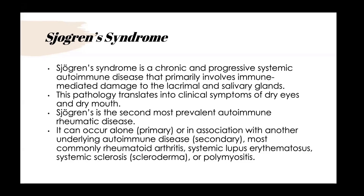Sjogren's is fairly common — it's the second most prevalent autoimmune rheumatic disease. It can be primary, meaning Sjogren's on its own, or secondary, with an underlying autoimmune disease most commonly rheumatoid arthritis, lupus, or scleroderma. It's important to co-manage these patients closely with a rheumatologist, and if they don't have one, referring out can be a great partnership.